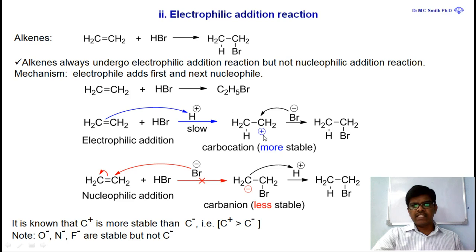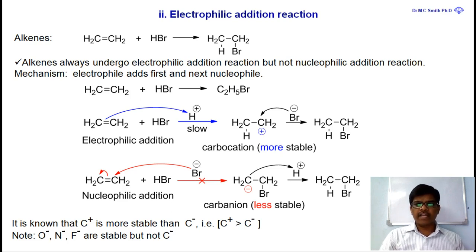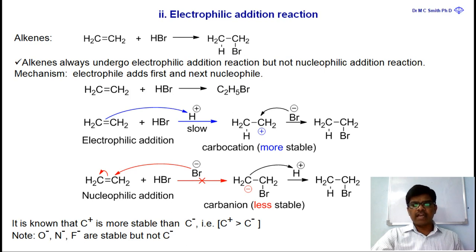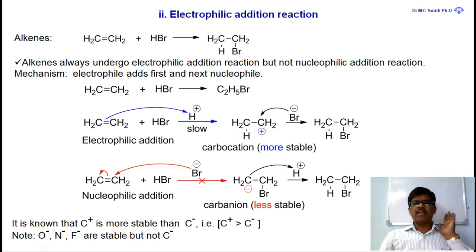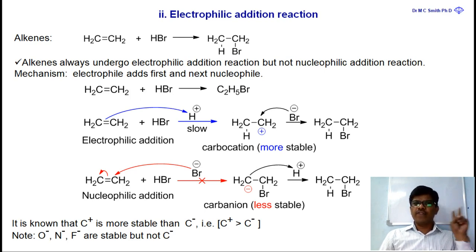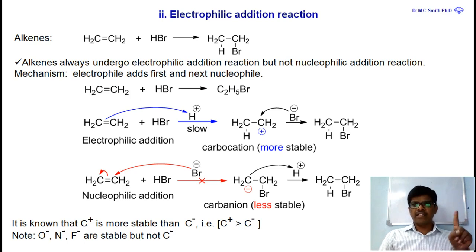The intermediate obtained in electrophilic addition reactions is a carbocation (C⁺). C⁺ is more stable than C⁻. The obtained carbocation then reacts with the nucleophile bromine to give ethyl bromide. In electrophilic addition reactions, the electrophile is added first, and the nucleophile is added second — that is why it is called electrophilic addition.